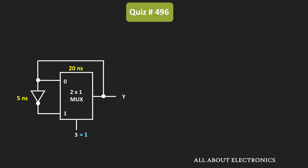As you know in a multiplexer, based on the selection input, any one of the two inputs will get selected. Since S is equal to 1, input number 1 will get connected to the output side. So for this circuit and with the given propagation delays, let us find out how this output Y will look like.